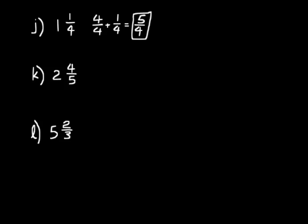Why don't you try to do K and L on your own and then turn the CD back on and check your work. So on K, we're dealing with fifths. We could break two into five-fifths plus five-fifths. That would be ten-fifths plus a four-fifths would give you fourteen over five or fourteen-fifths.